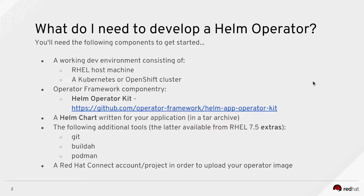What do you need to develop a Helm operator? You'll need the following components just to get started. We've already gone over setting up our development environment, starting with a real host machine as well as a Kubernetes or OpenShift cluster. In our webinar series we cover setting up MiniShift, which we should already have running. The operator framework componentry we'll be consuming today is the Helm app operator kit, available on GitHub in the operator-framework organization under the repository name helm-app-operator-kit.